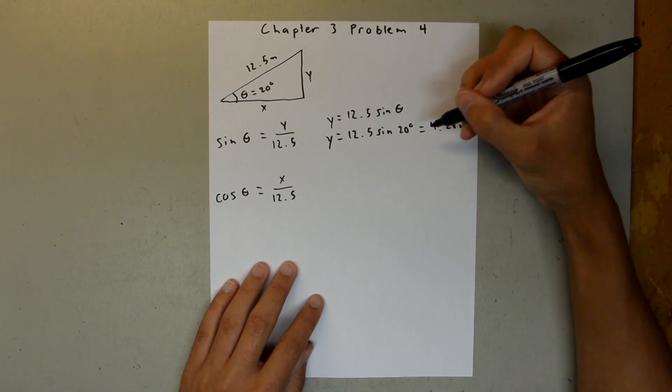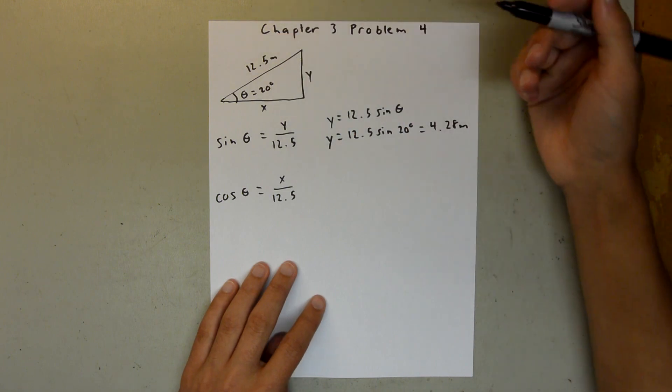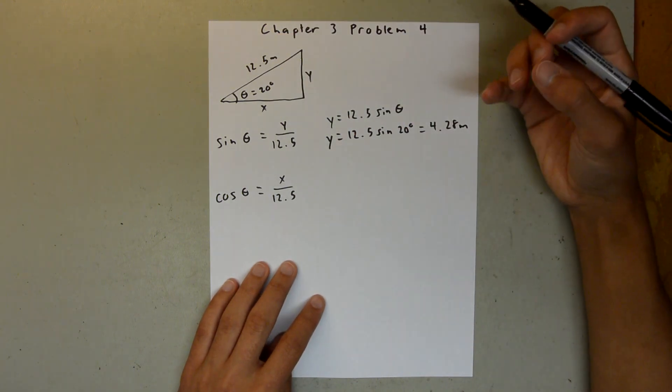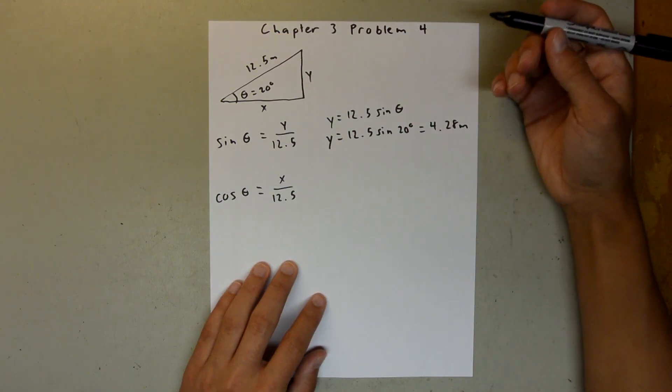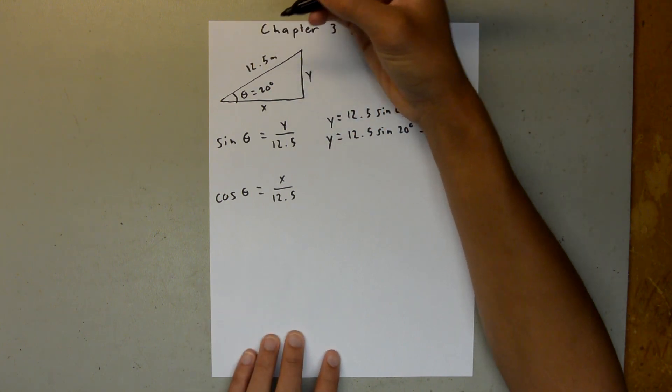My y value here, I rounded to three significant figures. If I were to use this to solve for my x value, my x value may be a little bit off due to rounding errors. So to be safe, I would always use the values that you're given in the problem, that you know are exact.